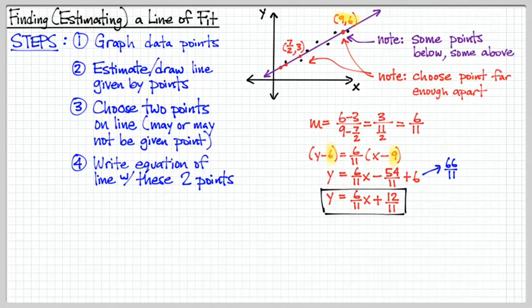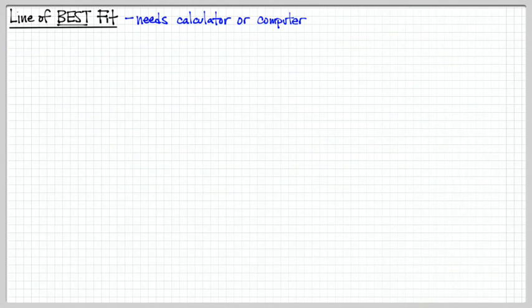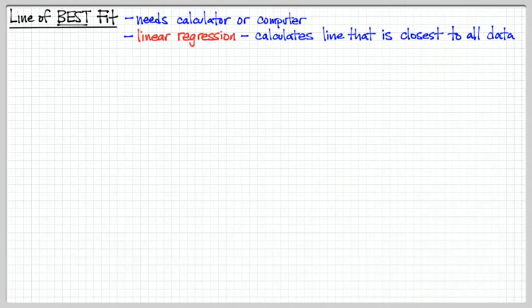So this is an example of how we estimate a line of best fit. Last thing, this is the line of best fit. And this is where we're not estimating, we're actually using a calculator or a computer to give us the results here. And we call this a linear regression. It calculates the line that is theoretically closest to all of the data points.